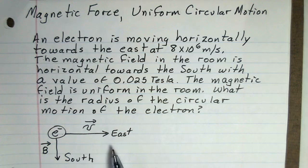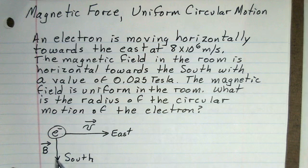The electron is moving to the east horizontally at 8 times 10 to the 6 meters per second. We're given a magnetic field in the room that's towards the south and has a value of 0.025 Teslas. The magnetic field is uniform everywhere the electron moves.